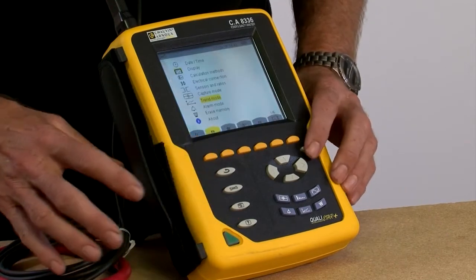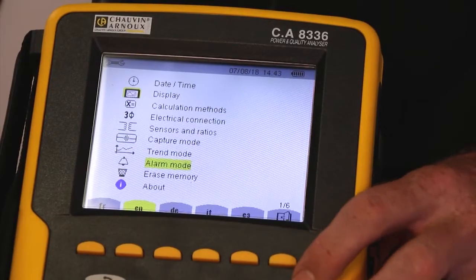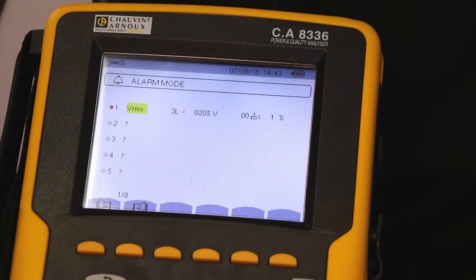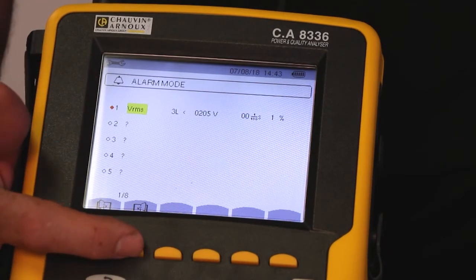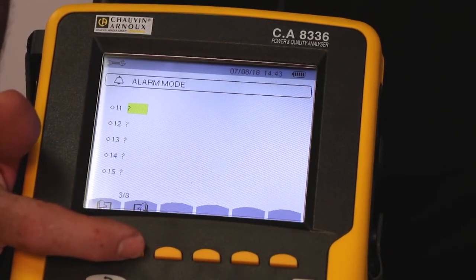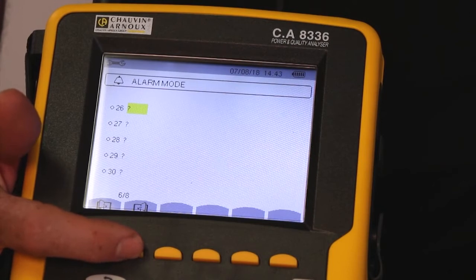The next position down is alarm mode. So I press the down key, hit Enter, and here we enter the alarm mode setup screen. I have 40 different alarms that I'm able to set. And you can see here that by using the fast key, we can go to those different pages of alarms.